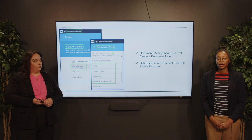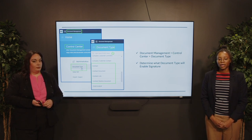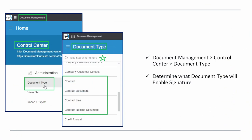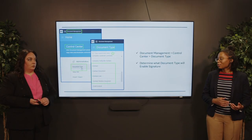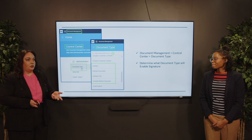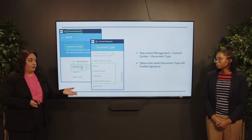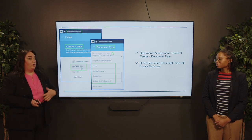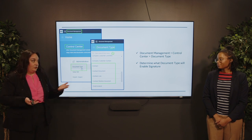The document signature process is available for all document types and is enabled at the document type level. This is not a global setup — you pick and choose which document types you want to enable the document signature process for. When you enable this flag, it makes it accessible within the application. You'll want to check out the document management control center, where you can review the document type options and consider which document types will be enabled for the document signature process. You can familiarize yourself with what document types are available and then pick and choose — and it's just as simple as clicking a flag.